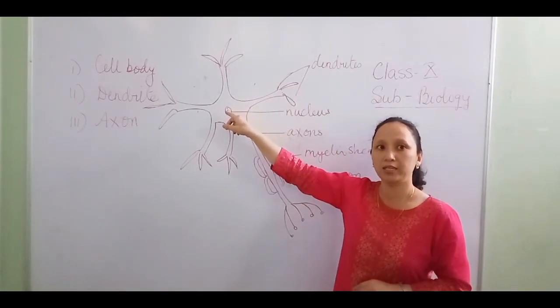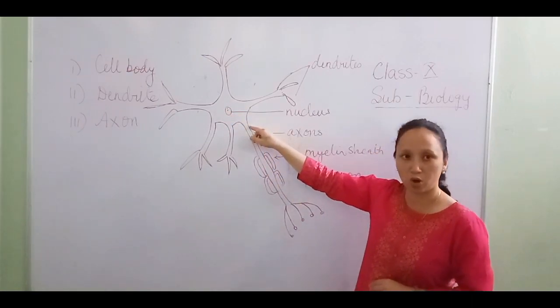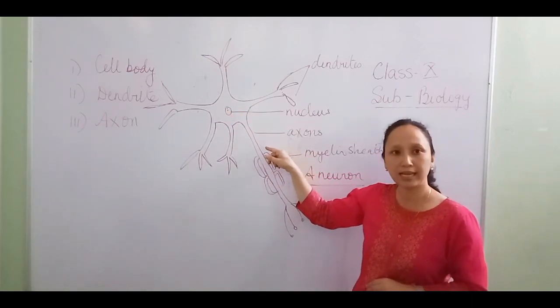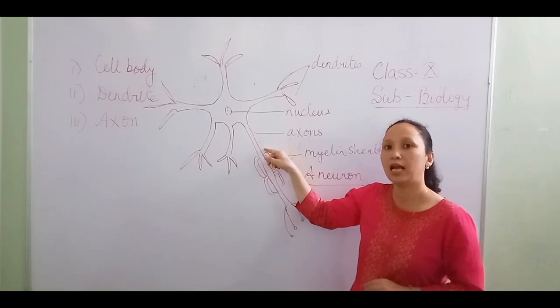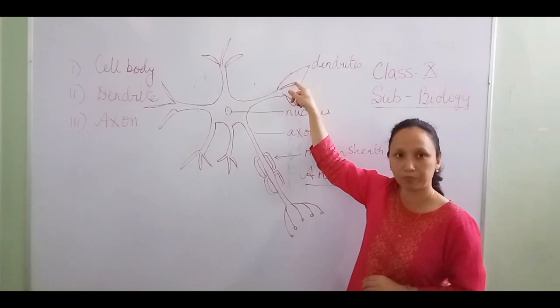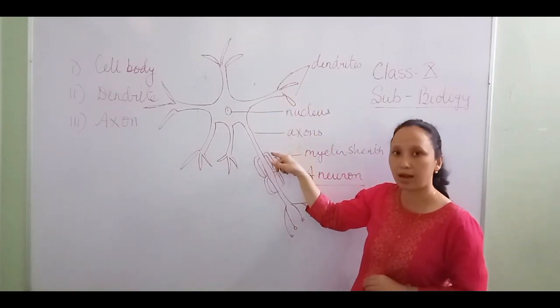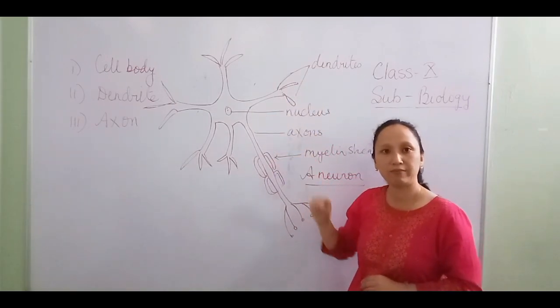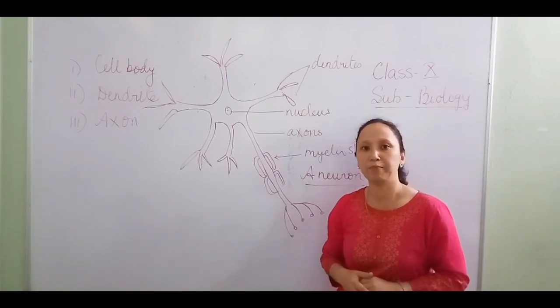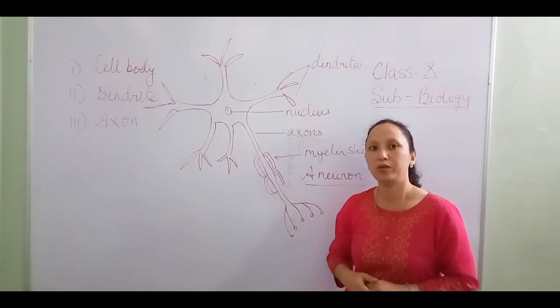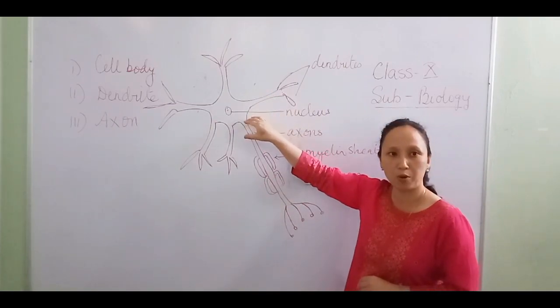The second part is called the axon. The axon is a single, relatively thicker, long, unbranched cytoplasmic extension which arises from the cell body.